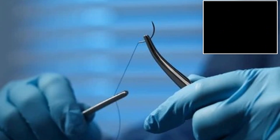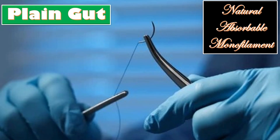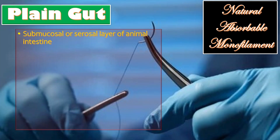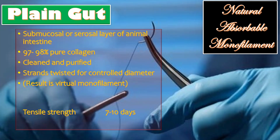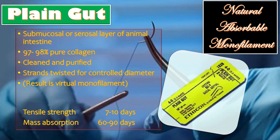Plain gut sutures are natural absorbable monofilaments also derived from the submucosal or serosal layer of animal intestine, consisting of 97 to 98 percent pure collagen. The strands are twisted to control diameter, resulting in a virtual monofilament. Tensile strength is maintained for 70 to 90 days, and mass absorption occurs within 60 to 90 days.